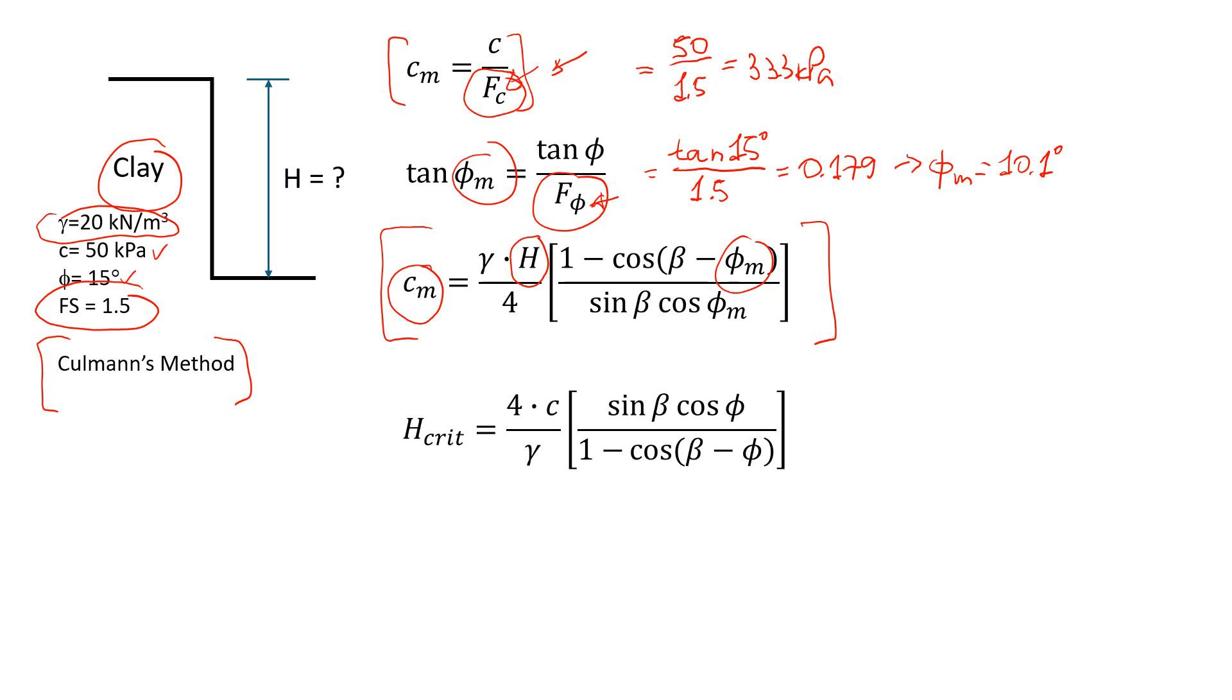Now we're going to use the formula and put in all the numbers we know. We have beta, which is the slope inclination. In our example, beta equals 90 degrees. We can use this for any slope - just change the inclination. It doesn't have to be 90, it can be 45 or 50 degrees. In our example it's 90 degrees. We write 33.3, which is the mobilized cohesion.